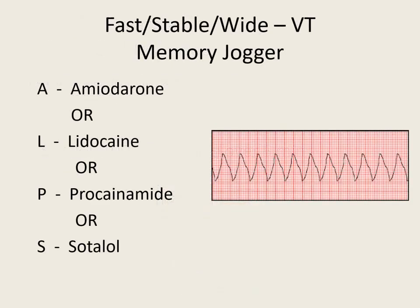As a review, if your rhythm looks like the mountains, think of the Alps. Amiodarone: 150 mg over 10 minutes. Lidocaine: 1 to 1.5 mg per kg, with subsequent doses of 0.5 to 0.75 mg per kg every 5 to 10 minutes until max of 3 mg per kg. Procainamide: 20 to 50 mg a minute until you fix them, they become hypotensive, QT interval elongates greater than 50%, or you reach max of 17 mg per kg. Or sotalol: 100 mg over 5 minutes.